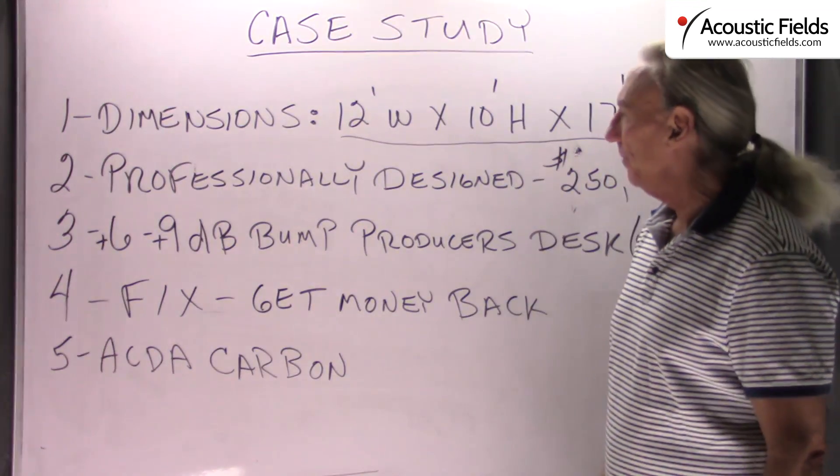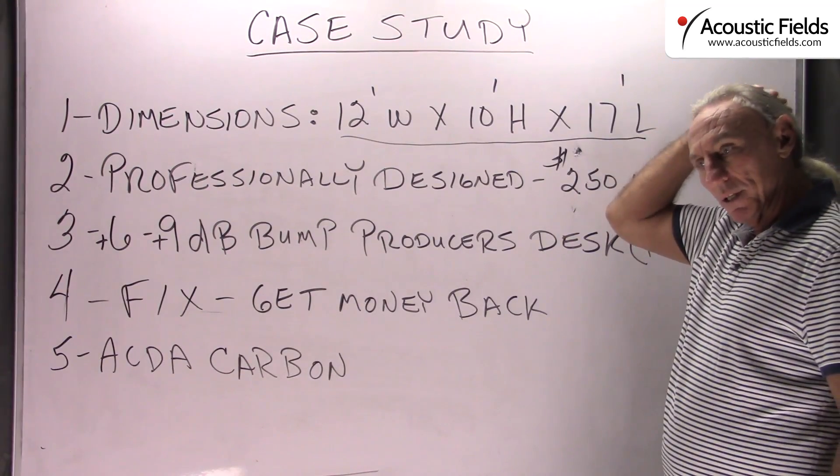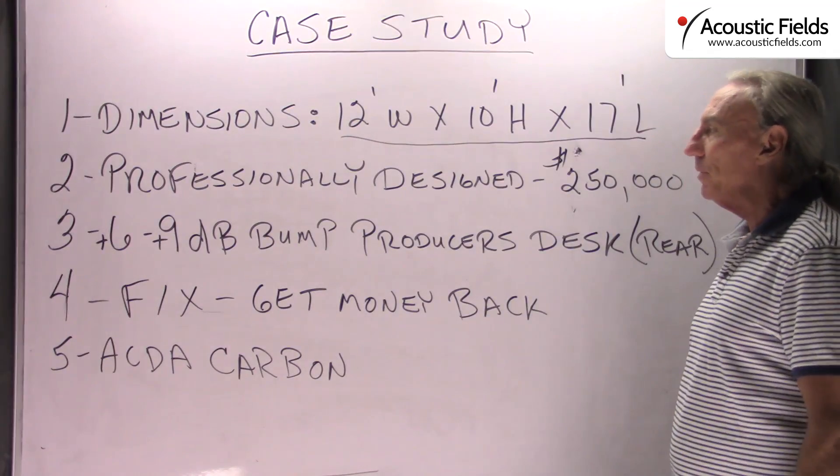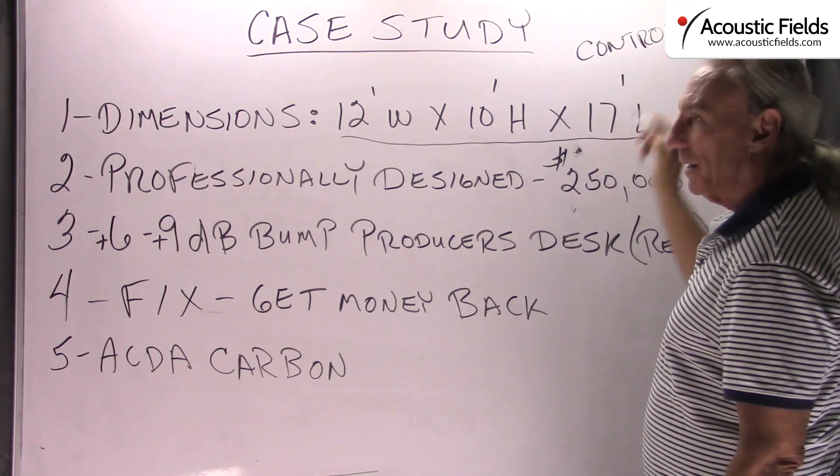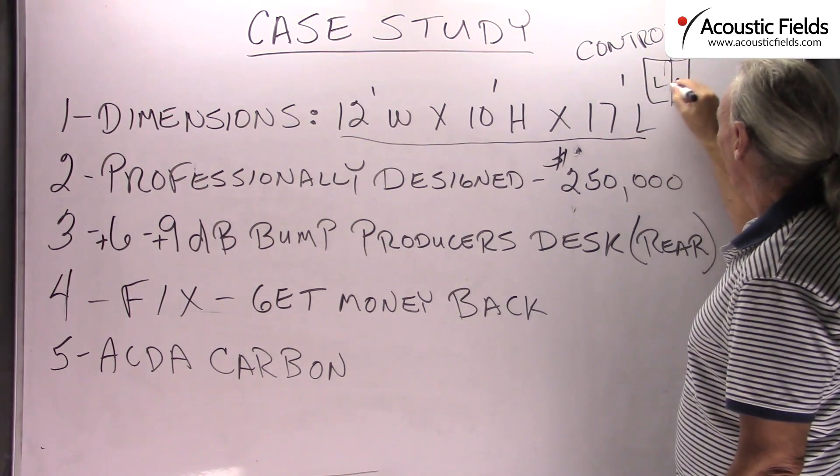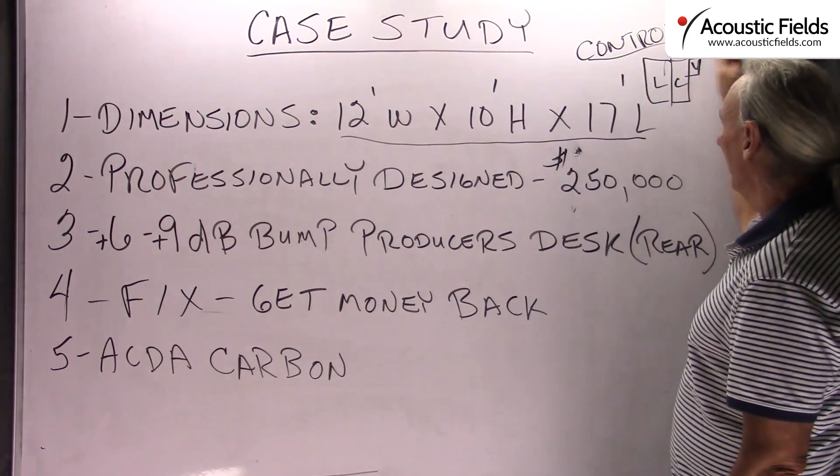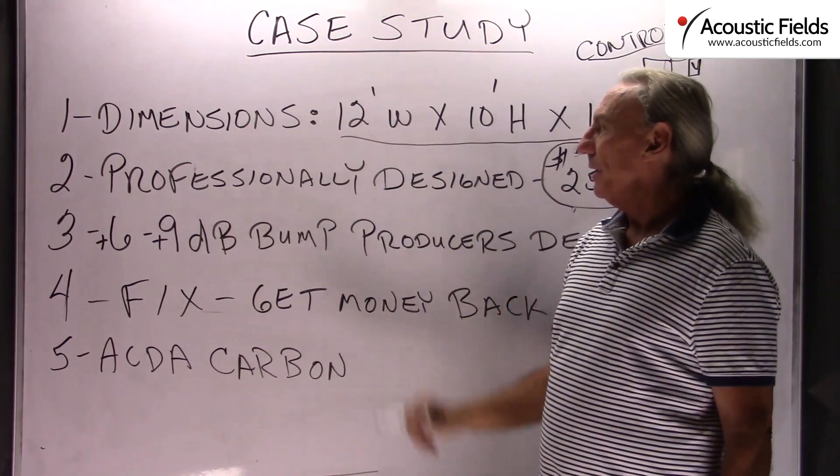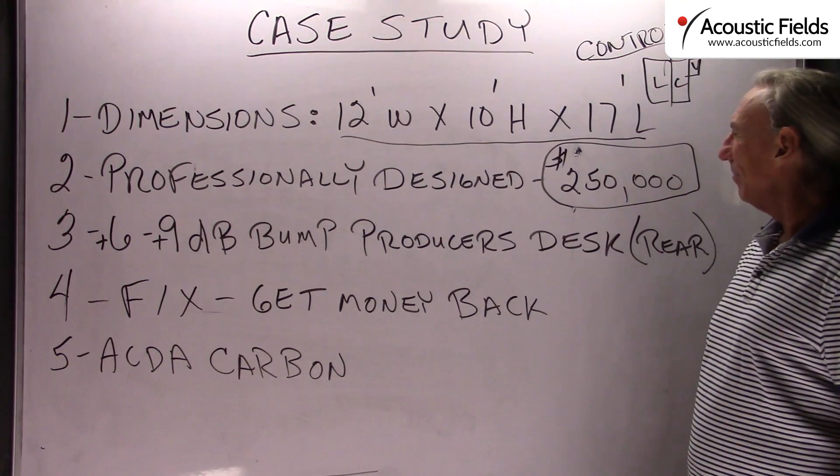It lends some credibility to what we do and tells you a little bit about what's out there and how expensive it is. So this guy had a room, it was a control room, and he had live and control and then he had live and then he had voice. He had a lot going on. Bottom line is he had spent over $250,000 on this room and he got a 12 foot wide room, 10 foot high and 17 foot long.